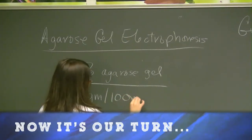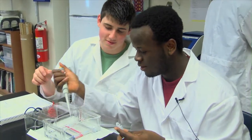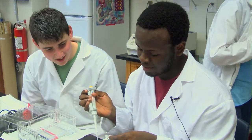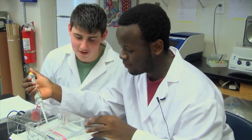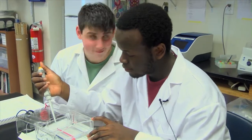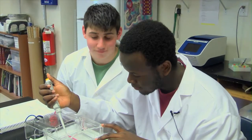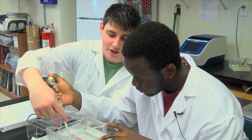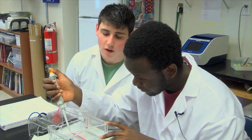What are you loading into your gel right now? Right now we are loading our negative control into the gel. What is the negative control? The negative control would be water — deionized water. What else have you loaded so far? So far we have loaded our molecular weight marker, EcoR1 and Indy3, which are all enzymes.